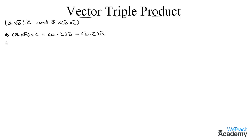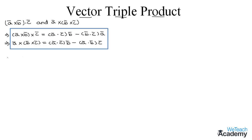Similarly, the next formula is (a̅ × b̅) × c̅ = (a̅ · c̅)b̅ − (a̅ · b̅)c̅. Now let us solve an example under this concept.